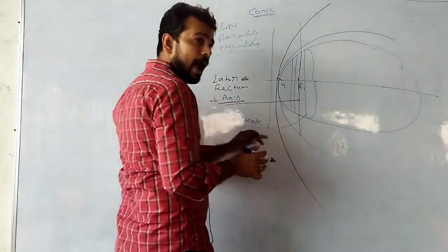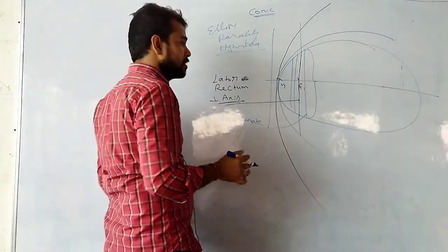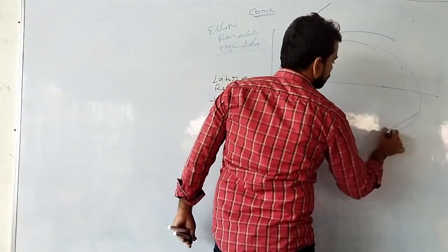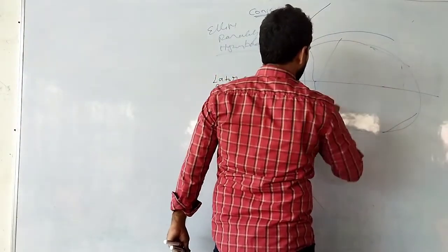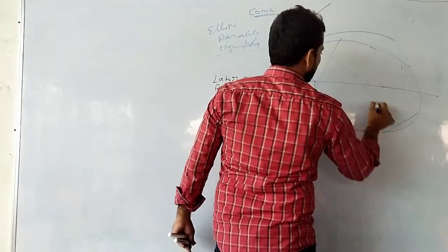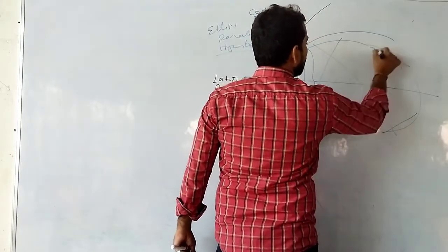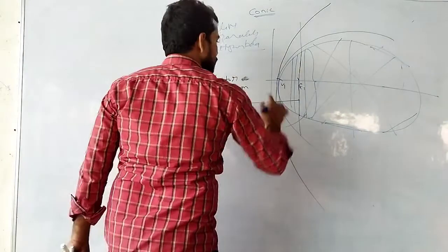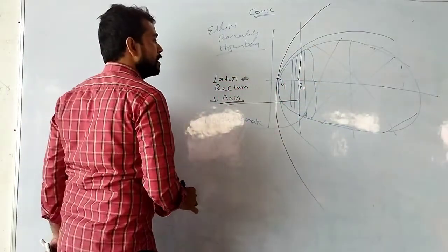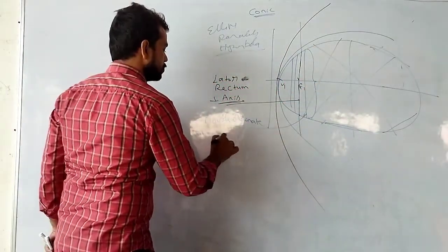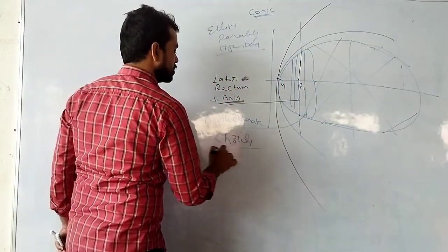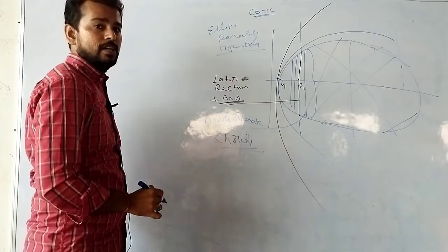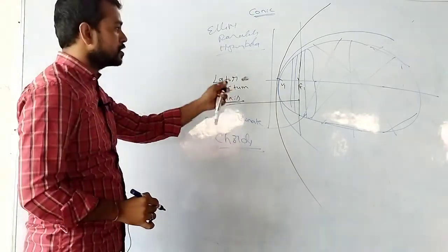Not only from focus, we can draw lines like this also. These lines from one side to the other of the curve are called double ordinates. Latus rectum, focus, and double ordinate are common for all three curvatures — for ellipse, parabola, and hyperbola. They will also have chords.